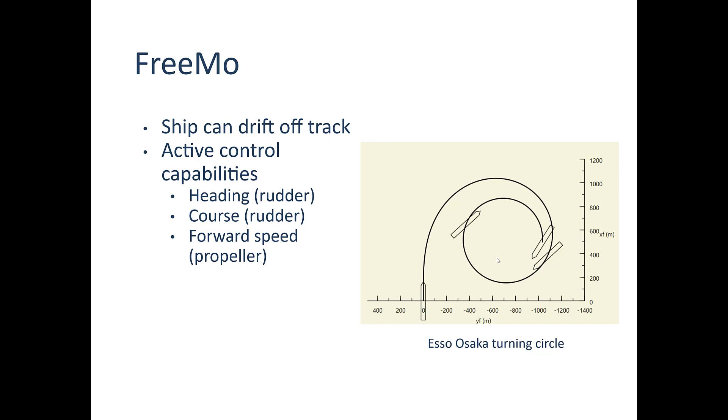So if you don't have course control, you might have the same heading but you can drift laterally off course. There's also a forward speed controller which adjusts the RPM of the propeller automatically to try to maintain that similar forward speed, which is really nice.